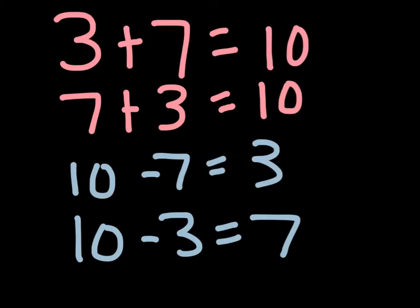In a fact family, all three numbers are related, which means I only use these three numbers. So if 3 plus 7 equals 10, 7 plus 3 equals 10, 10 minus 7 equals 3, and 10 minus 3 equals 7. Notice how I only use these three numbers.